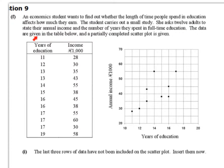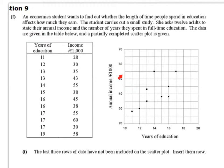The data are given in the table below and a partially completed scatterplot is given. The years of education range from 11 to 19. Here's the income in €1,000s. On the scatterplot, years of education is along the horizontal axis and annual income in €1,000s is along the vertical axis.